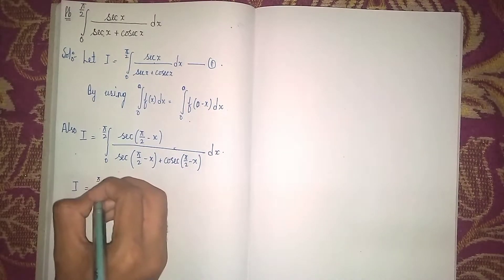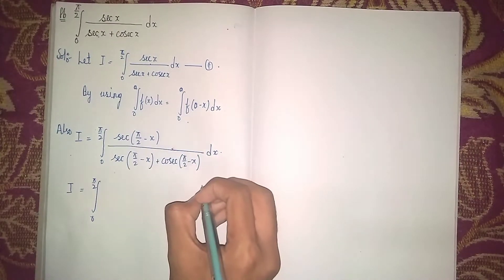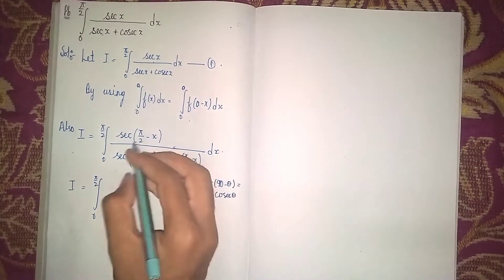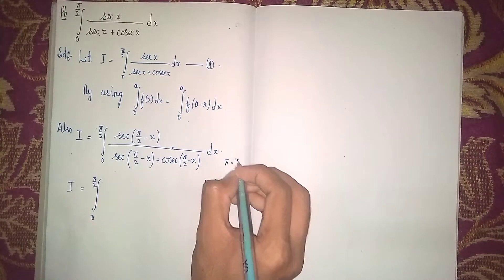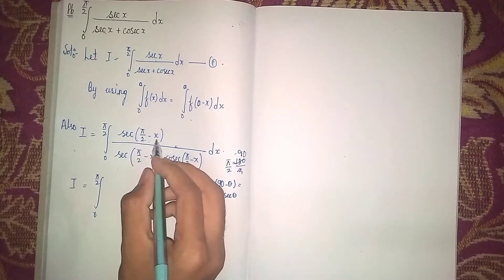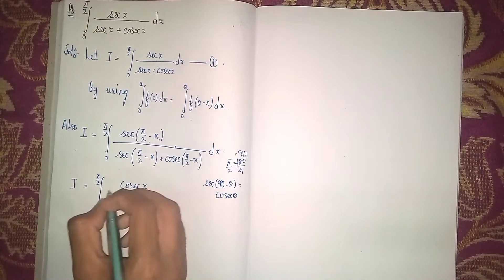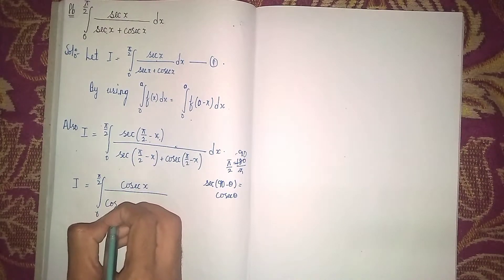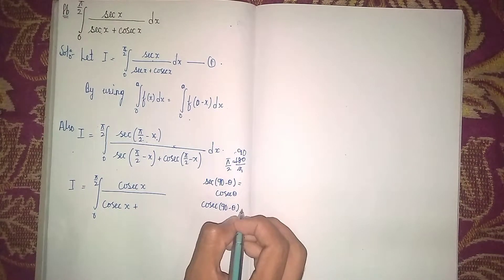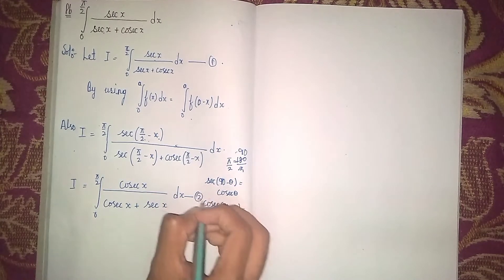Now we use our trigonometric identities. Since π/2 equals 90°, we have sec(90° minus θ) equals csc(θ), so sec(π/2 minus x) becomes csc(x) in the numerator. Also, csc(90° minus θ) equals sec(θ), so csc(π/2 minus x) becomes sec(x). Therefore this becomes I equals integral from 0 to π/2 of csc(x) divided by (csc(x) + sec(x)) dx. Take this as equation 2.